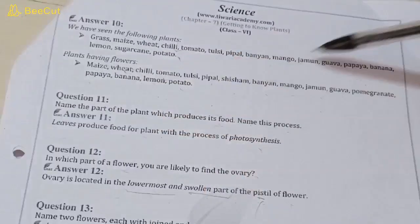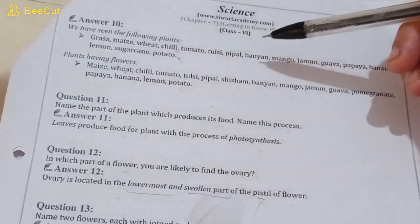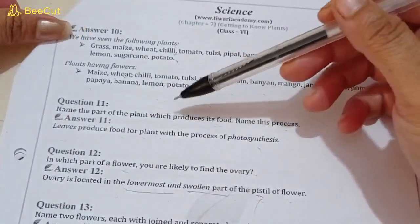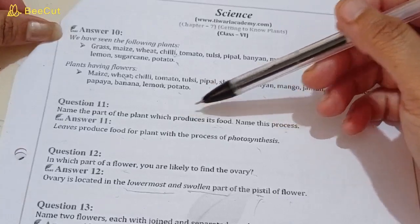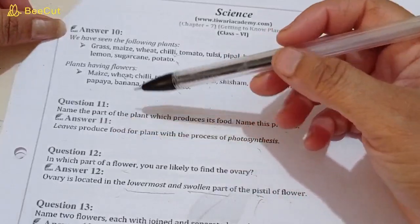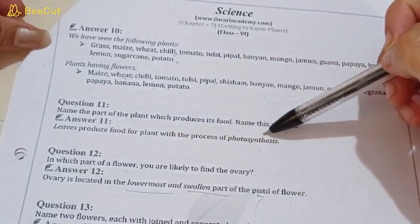Question number eleven: name the part of a plant which produces its food. Which is the part of the plant that produces its food? The answer is leaves. Leaves produce food for the plant with the process of photosynthesis.